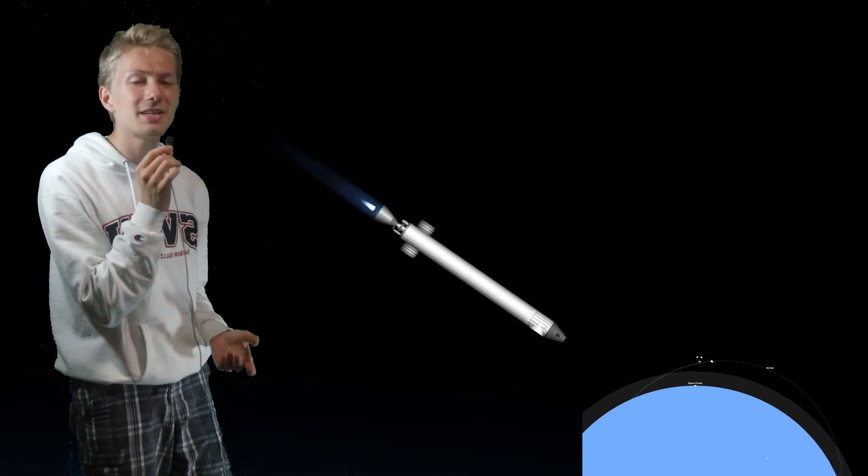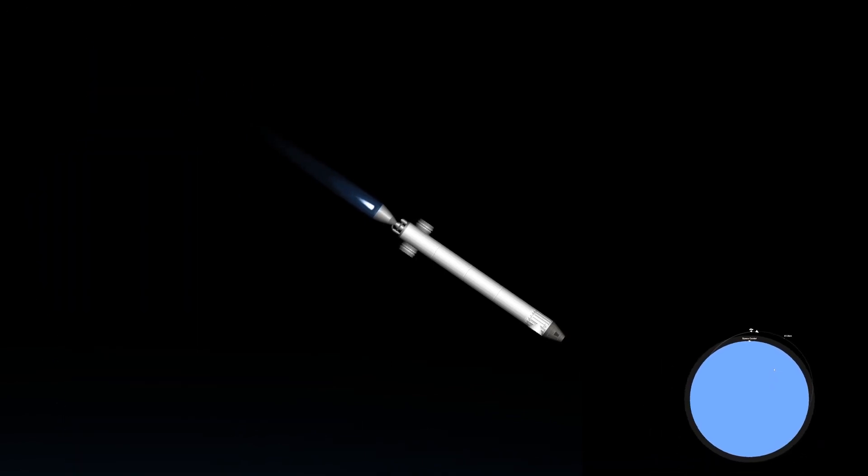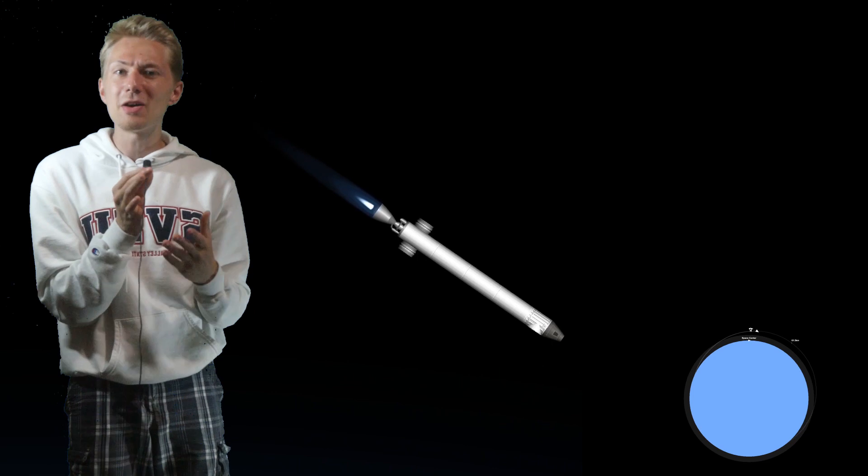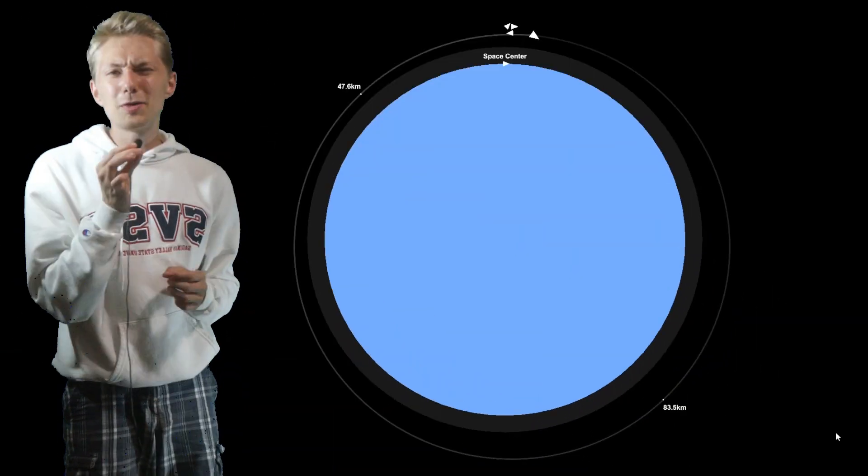And now we wait for the rocket to get a near perfect orbit. And now just about after an effortless two minutes, the rocket has achieved a near perfect orbit around the earth. Thank you for watching and check out these videos for more content.